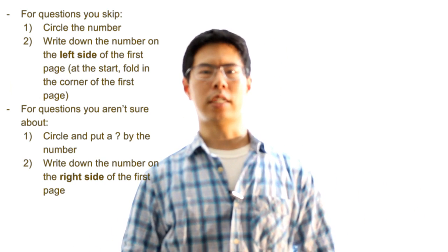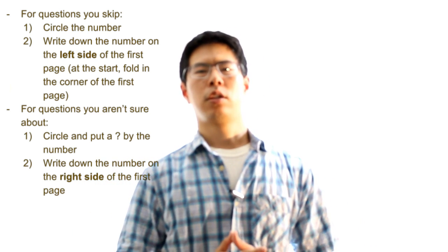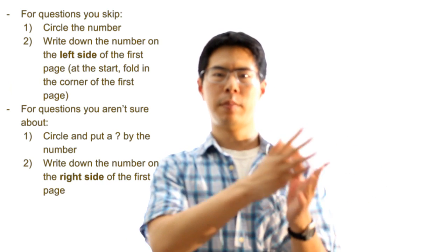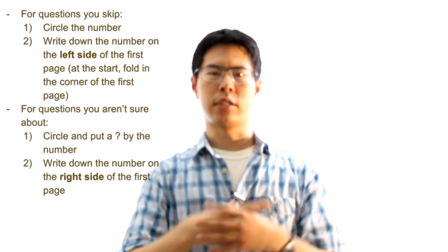Right when you start the test, fold in the corner of the first page of the test so you can find it easily. On this page, you will write down the numbers of questions that you skip on the left side of the page and the numbers of questions that you're not entirely sure of the answer on the right side.